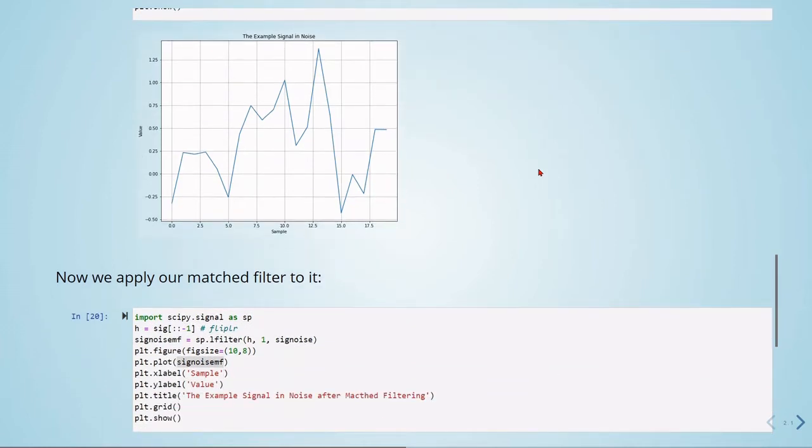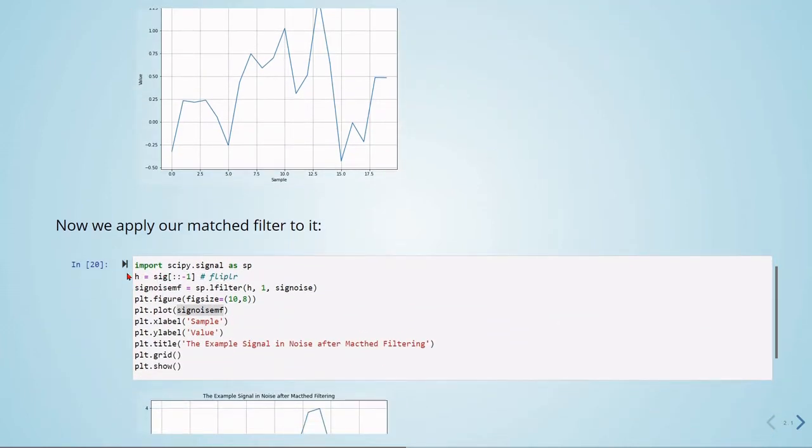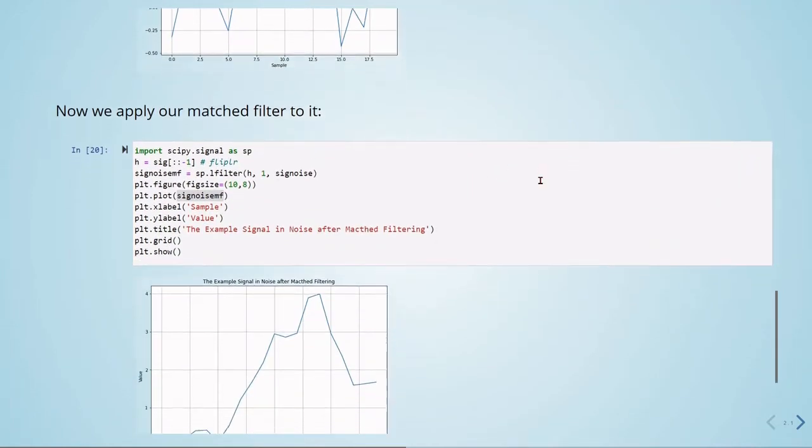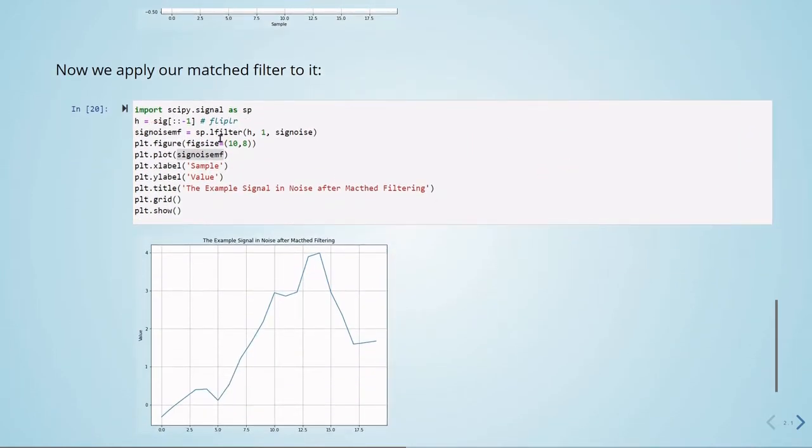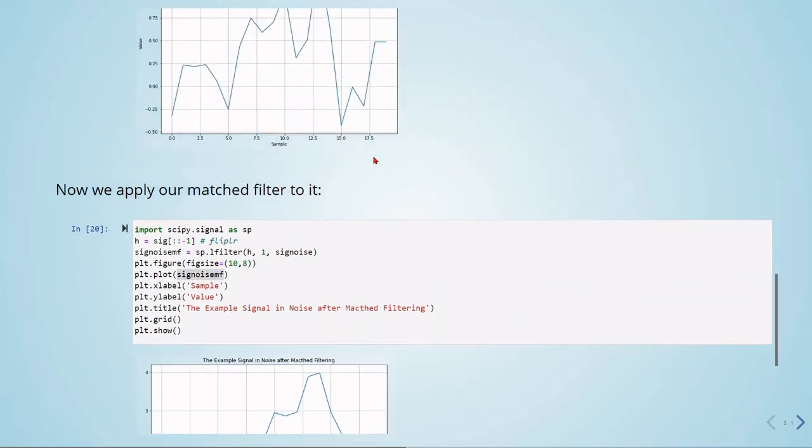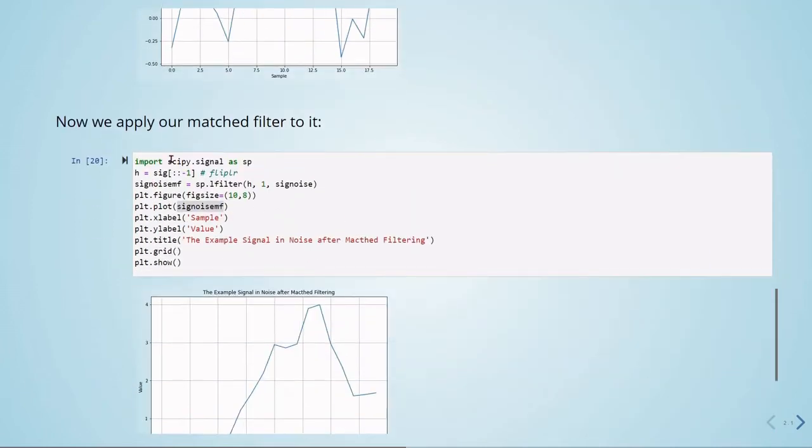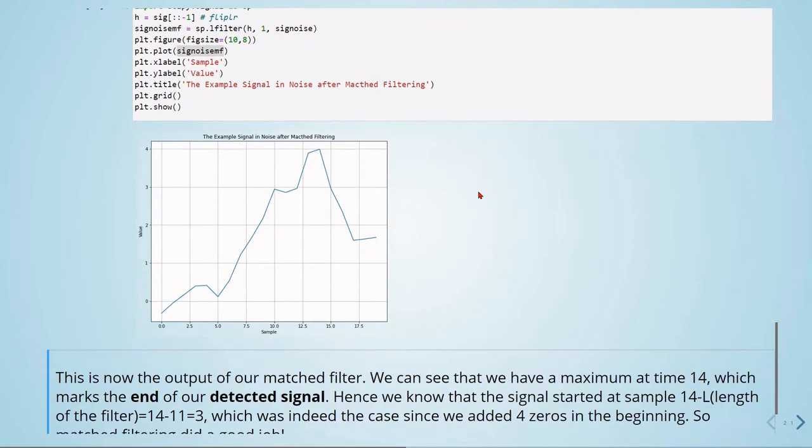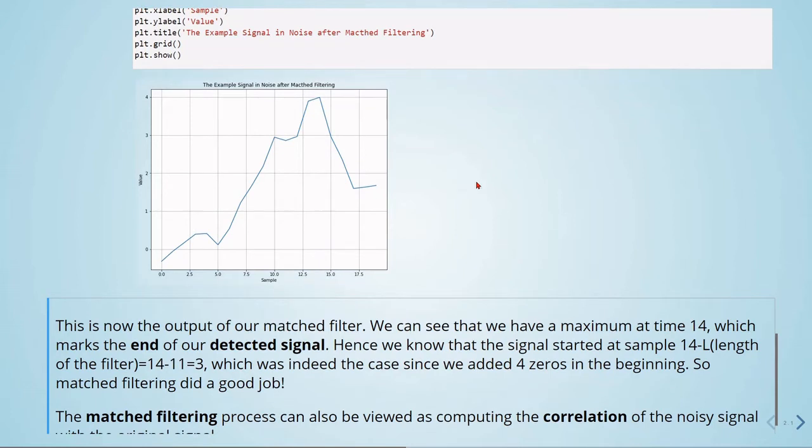So now we will apply our matched filter. So here is the impulse response of the matched filter. We are reversing our signal here. And when we apply the matched filter, we are using scipy signal L filter. So we are filtering the signal plus noise, which is here, with our impulse response here. And we get this is the example signal noise after matched filtering. So this is now the output of our matched filter. And we can see that we have a maximum at time 14, which marks the end of our detected signal.